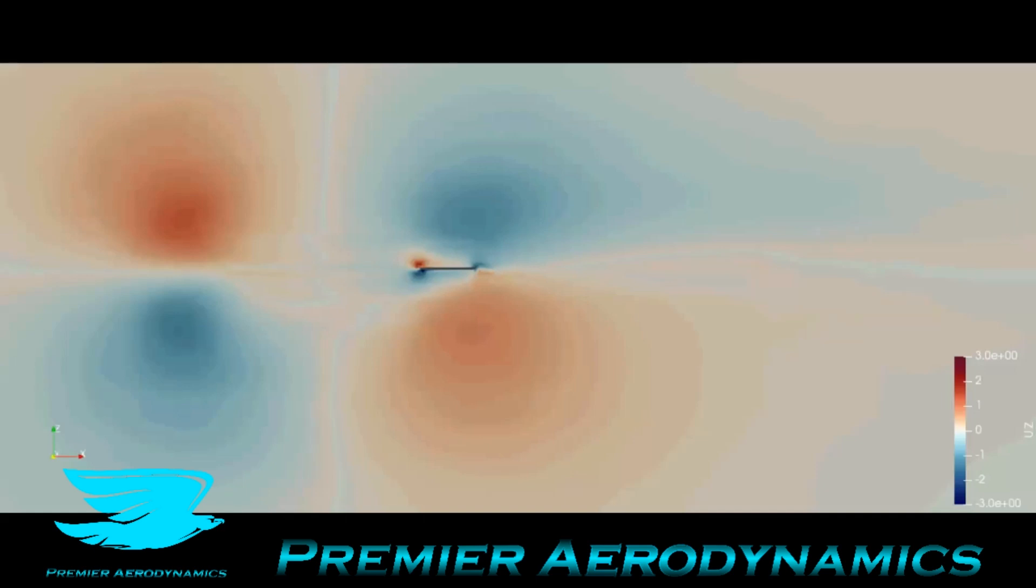And this is that same plane, but it has the U-z velocity. So red is going up and blue is going down.